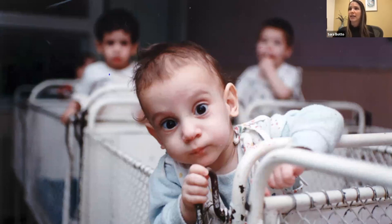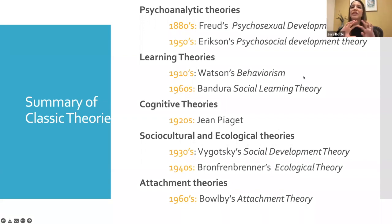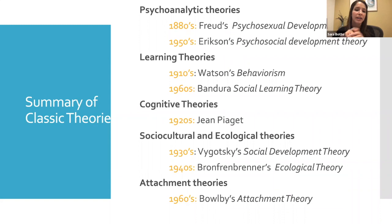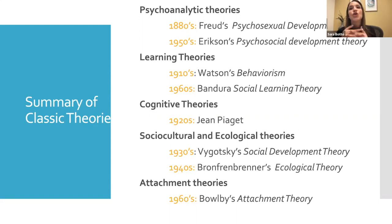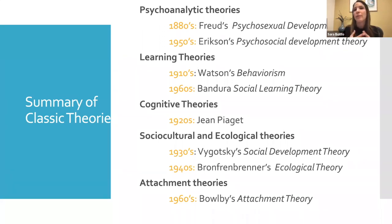To summarize, we've covered a lot of different theories that explain child development: psychoanalytic theories, learning theories, cognitive theories, social-cultural and ecological theories, and attachment theories. Each theory tries to emphasize what really matters in explaining children's development, and as we've discussed, there are very different ideas about what might account for this.